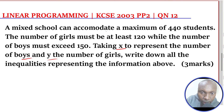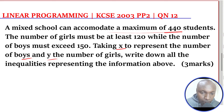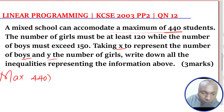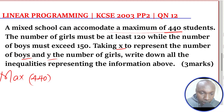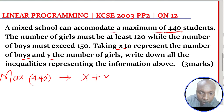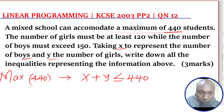The first statement: the school can accommodate a maximum of 440 students. These 440 students are made up of boys and girls. A maximum of 440 means when I take the number of boys and add the number of girls, that number should be less than or equal to 440. It should not be more than 440. So the inequality is X plus Y less than or equal to 440 — that is the total number of boys plus girls. That is how we form the first inequality.